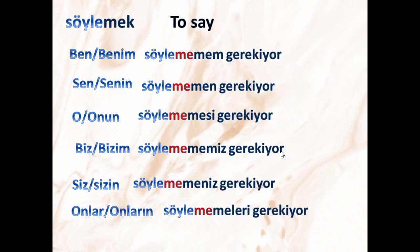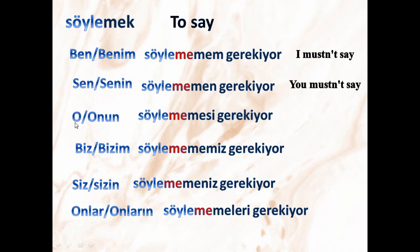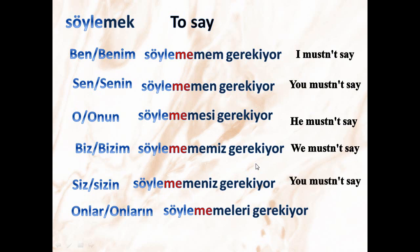Next verb: 'söylemek', which means 'to say' — you will use this verb a lot. Ben/benim söylememem gerekiyor — I mustn't say. Sen/senin söylememen gerekiyor — you mustn't say. O/onun söylememesi gerekiyor — he mustn't say. Biz/bizim söylemememiz gerekiyor — we mustn't say. Siz/sizin söylememeniz gerekiyor — you mustn't say. Onlar/onların söylememeleri gerekiyor — they mustn't say.